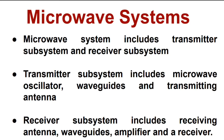A microwave system includes a transmitter subsystem and a receiver subsystem. The transmitter subsystem includes a microwave oscillator, i.e. the source, waveguides, and a transmitting antenna. The receiver side has a receiving antenna, waveguides, an amplifier, and a receiver.